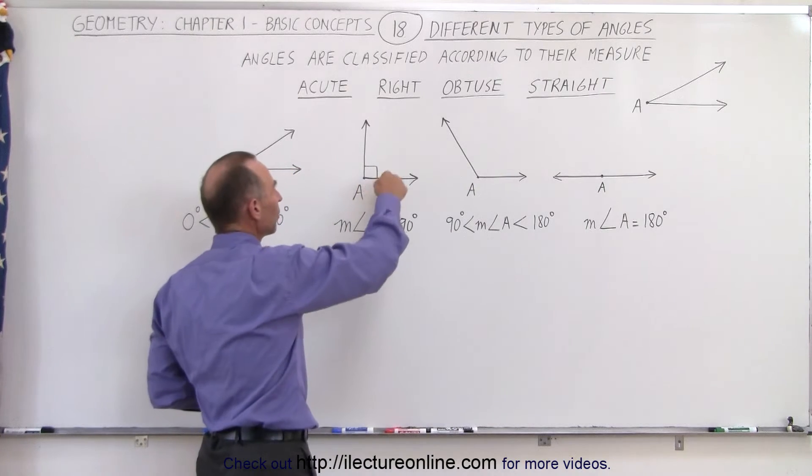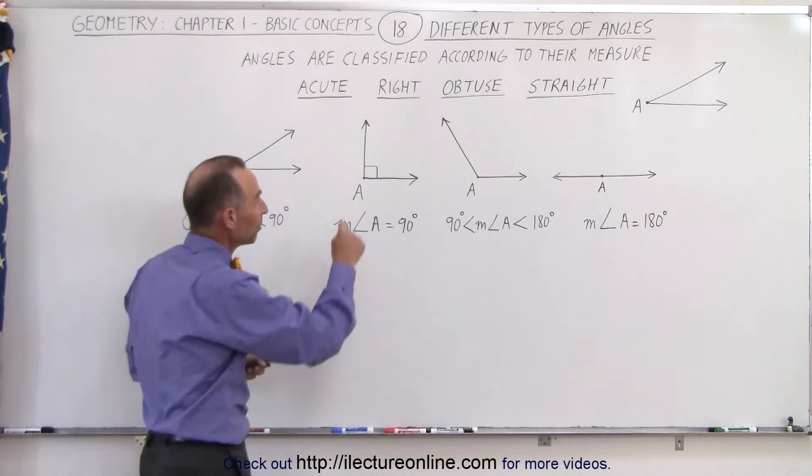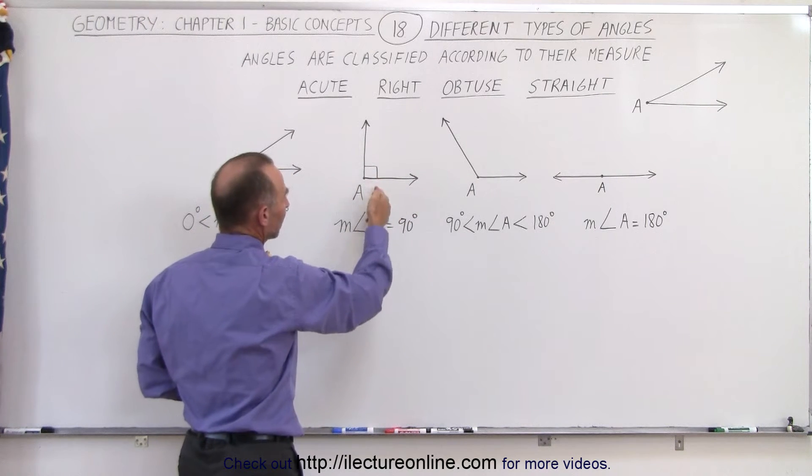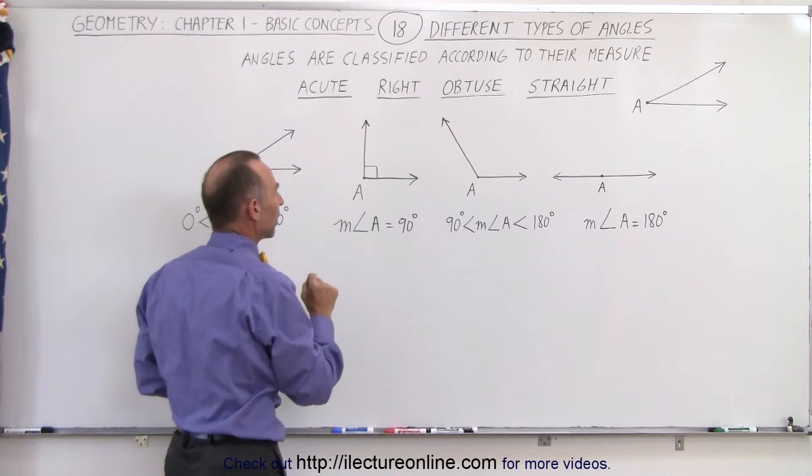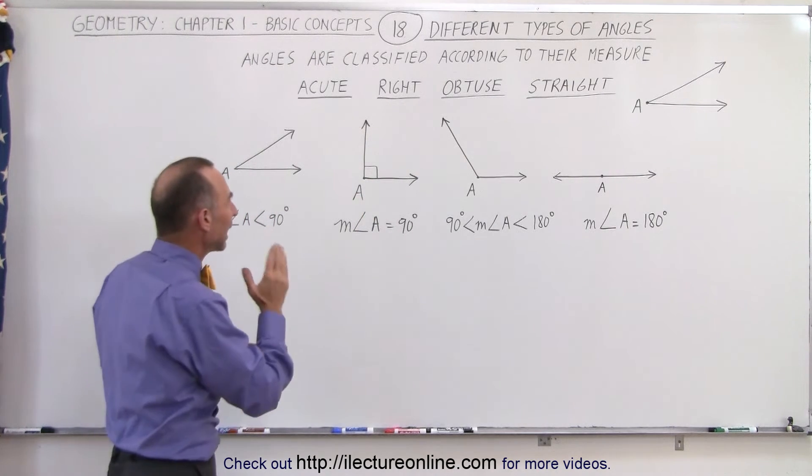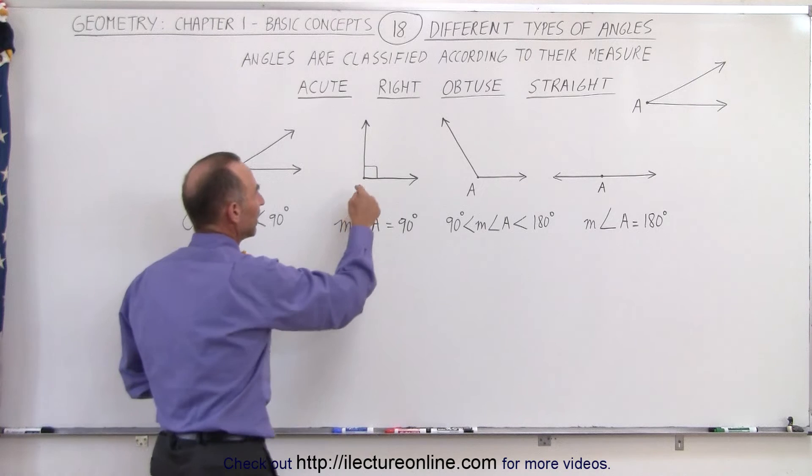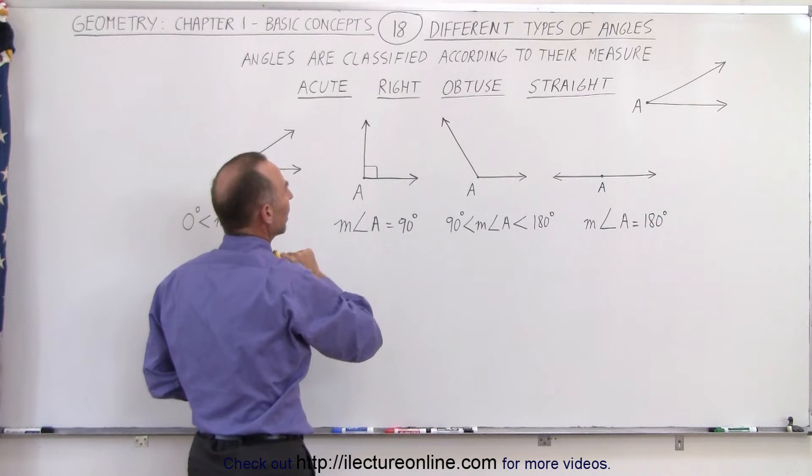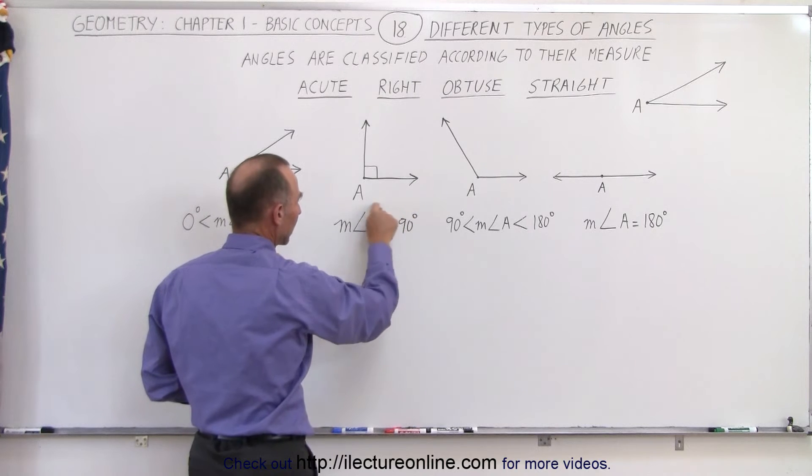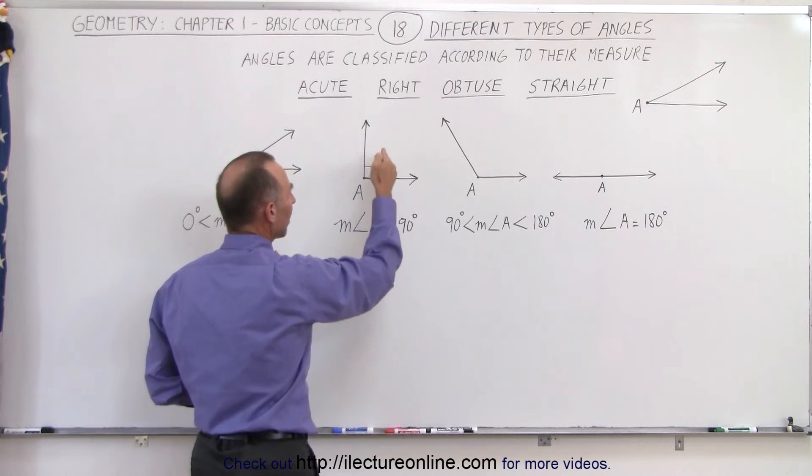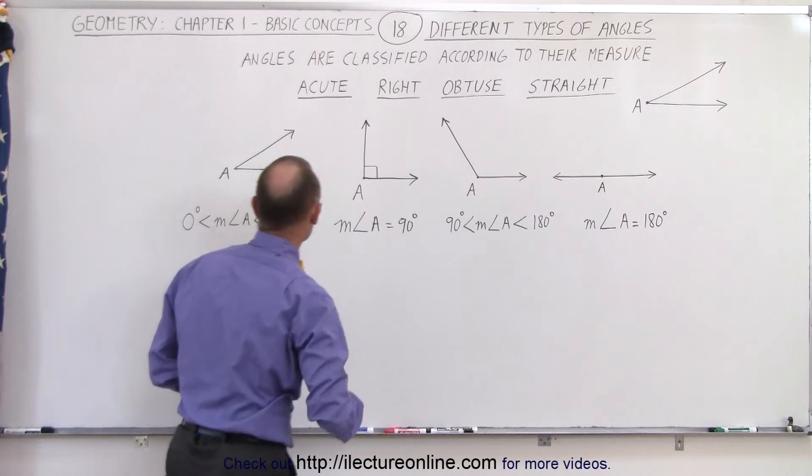Notice something peculiar about the right angle. We have a little symbol here where we draw a line parallel to this ray and a line parallel to this ray making a little box there. That box has an indication that that angle is equal to 90 degrees. And therefore this is called the right angle when the measure of the angle equals 90 degrees. And that's what we indicate right here: the measure of angle A is equal to 90 degrees. That makes that a right angle.